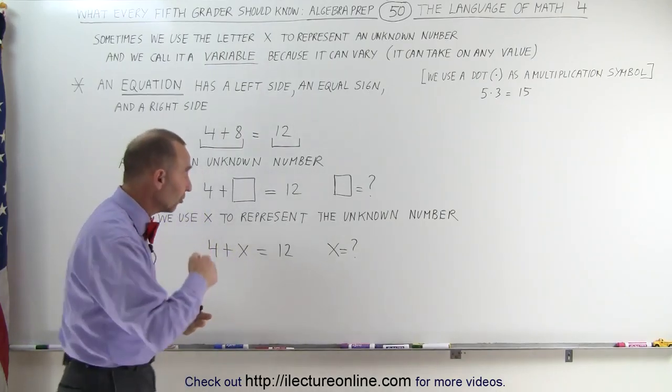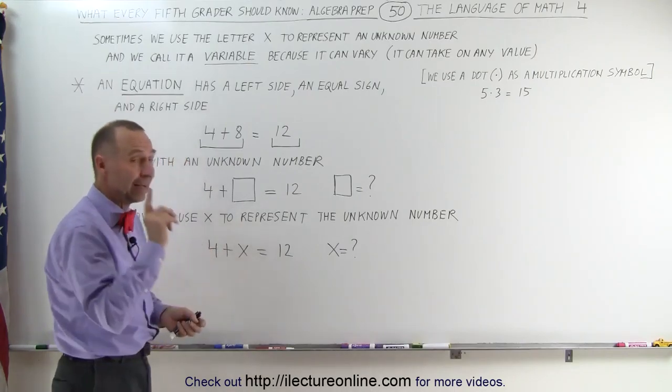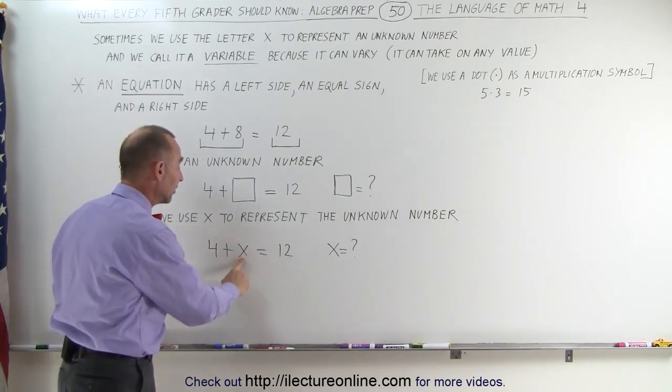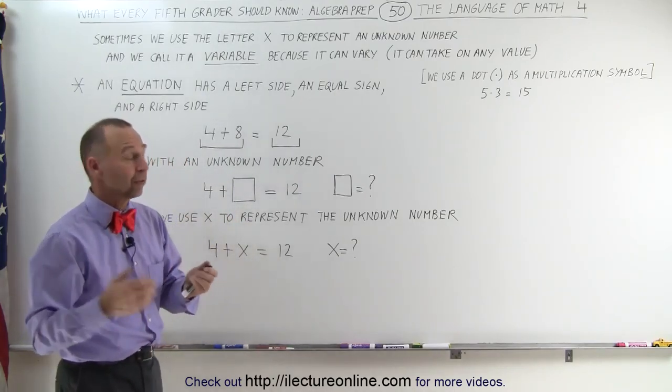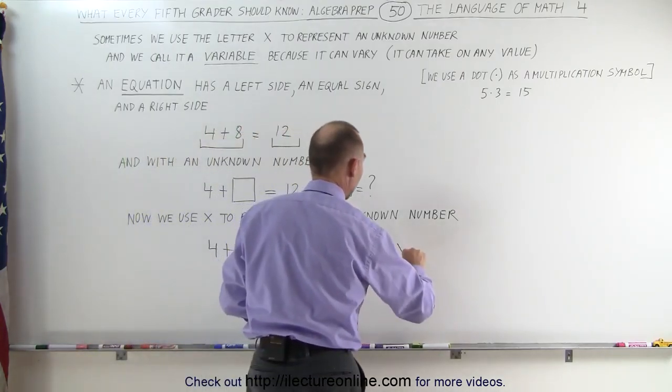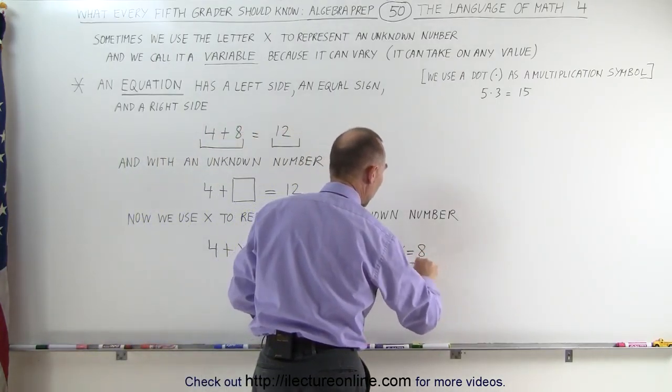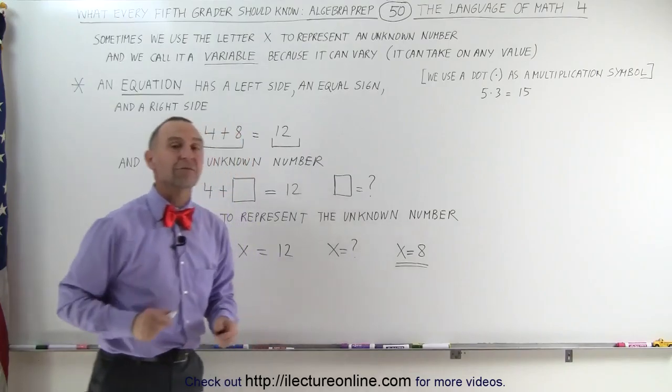And in this case, when we look at it, we realize the right answer is when X equals eight, the left side equals the right side, because four plus eight is indeed equal to 12. And so we could say the answer is that X is equal to eight, or the unknown number we're looking for has the value of eight.